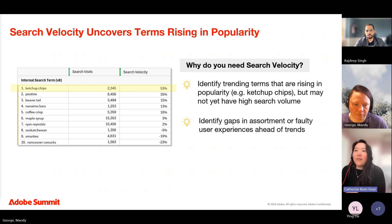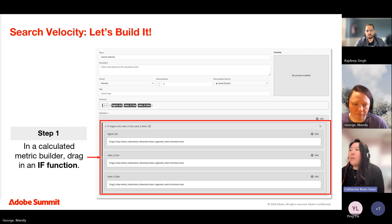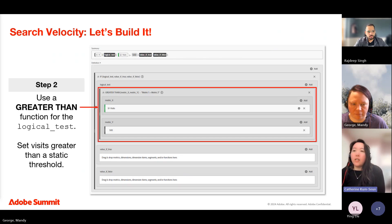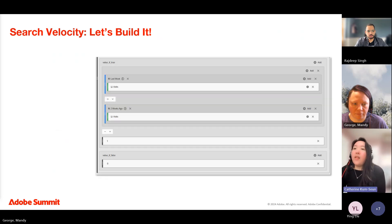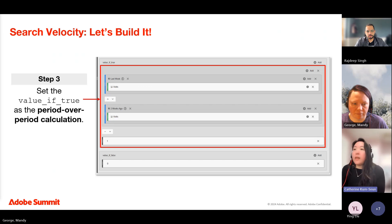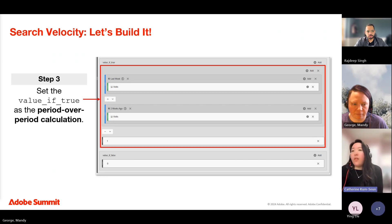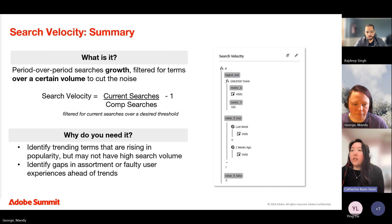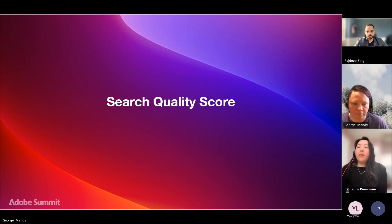Let's build search velocity together. Step one: in Workspace, open a calculated metric builder and drag in an IF function. Step two: as your logical test, use a greater-than function and set visits greater than some static threshold — we used 500, but determine what works for your org based on your search volume. Step three: for the value if true, set that to your period-over-period growth calculation using segments based on date ranges. For value if false, set that to zero. It's a quick, impactful, easy-to-understand metric you could probably build right now.